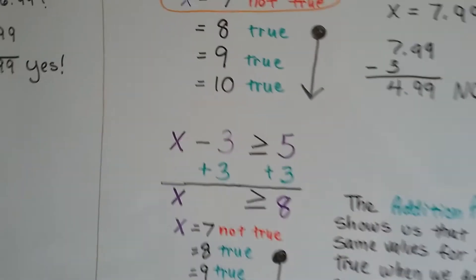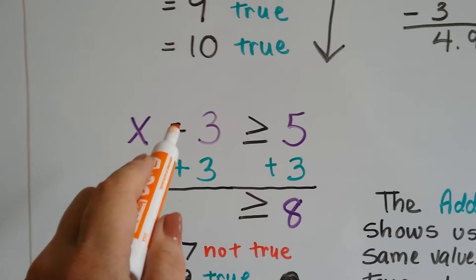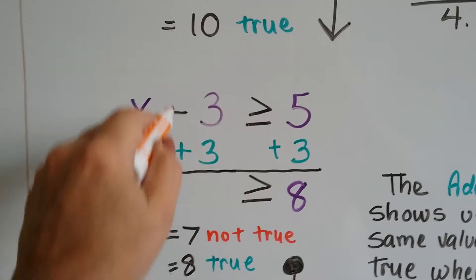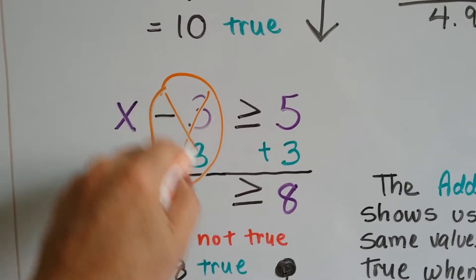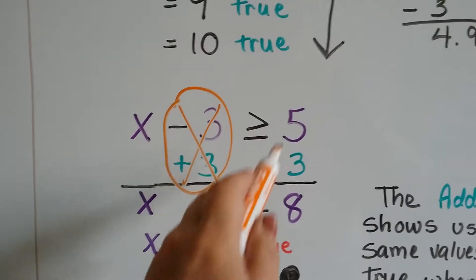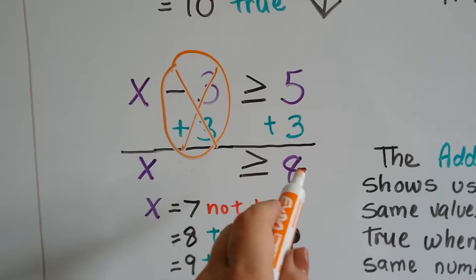Now what happens if we were to add 3 to each side of the inequality sign? If we have a negative 3 and add a positive 3, that's going to create a zero pair. We're going to be back to zero. So that's gone. We've eliminated it. And 5 plus 3 is 8. So now it says x is greater than or equal to 8.